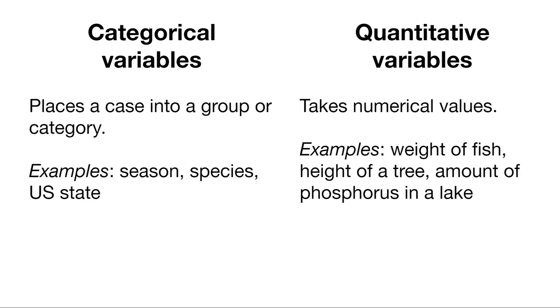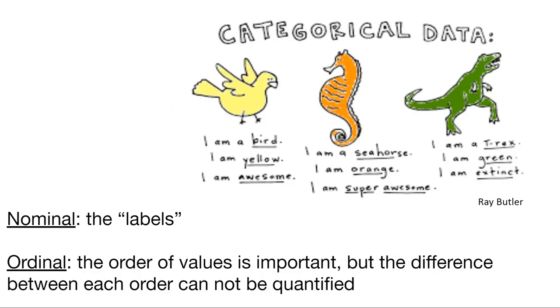Quantitative variables are numbers. They take numerical values. How much does a fish weigh? What's the height of a tree? How much phosphorus is in a lake? All examples of quantitative variables.